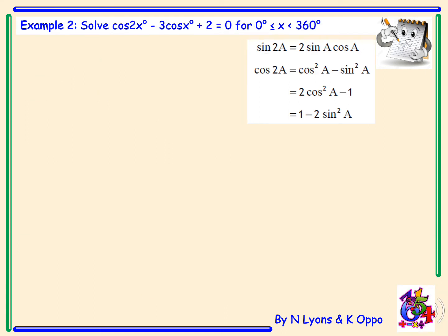Example 2: Solve cos2x - 3cosx + 2 = 0 for x between 0 and 360 degrees. We have a double and single angle, so we use our double angle formulae. For cos there are three options — we need to pick the correct one that allows us to factorize. The middle term is -3cosx, so we want an expression with only cosine terms. We pick the middle option: cos2x = 2cos²x - 1.